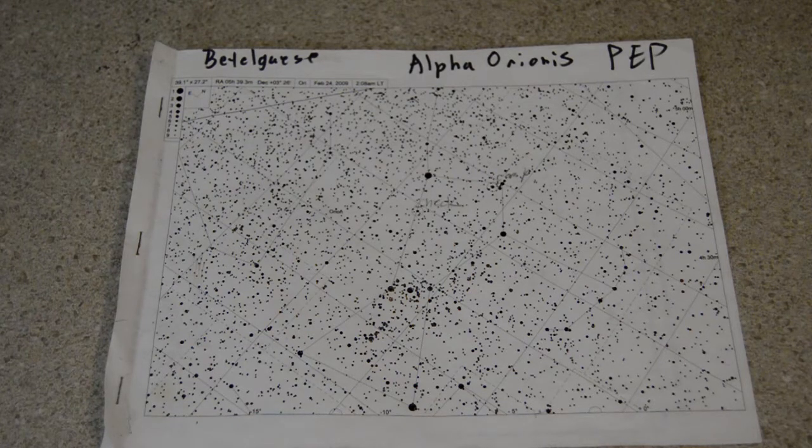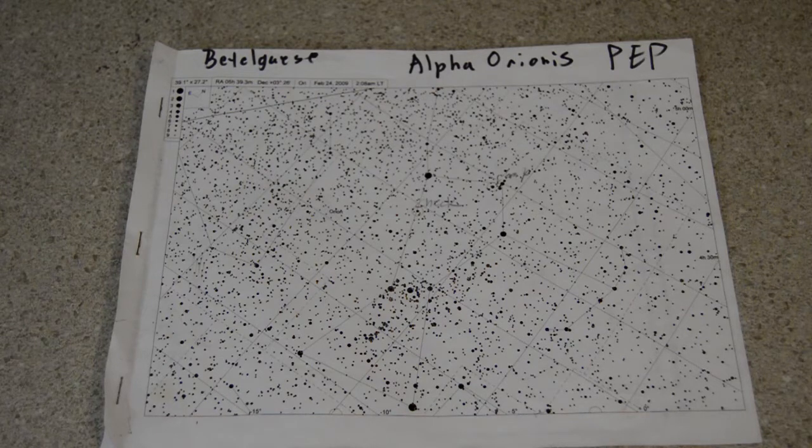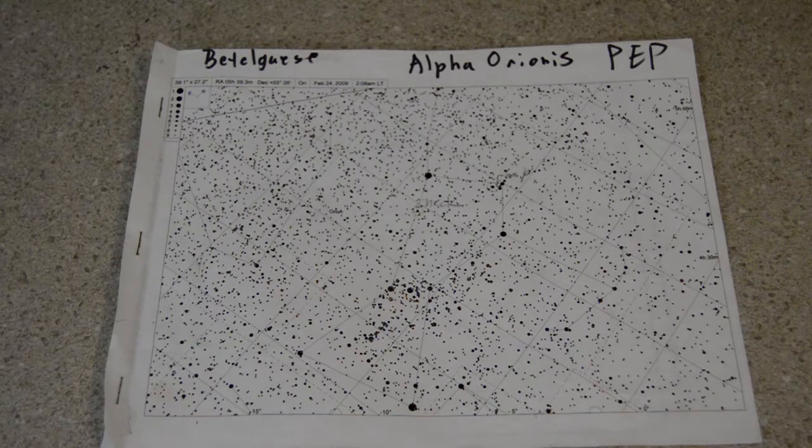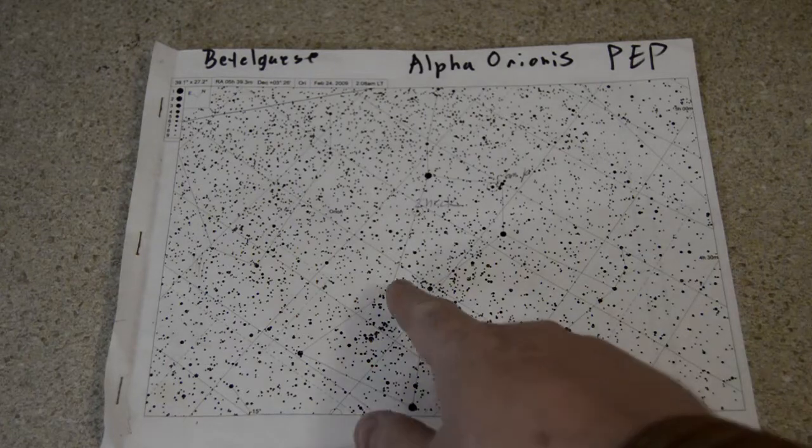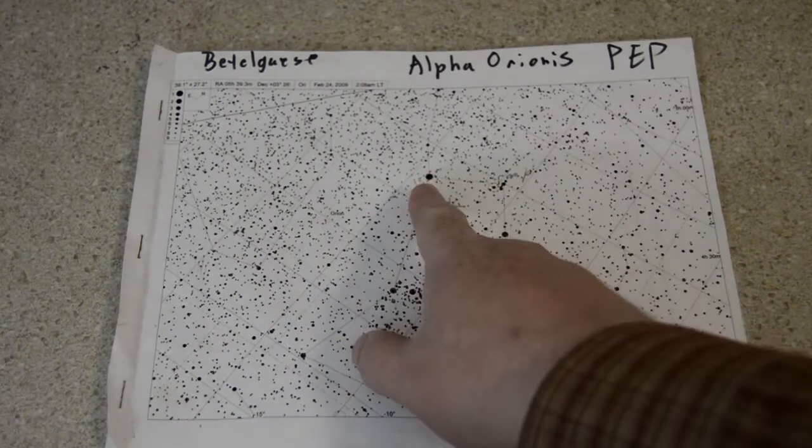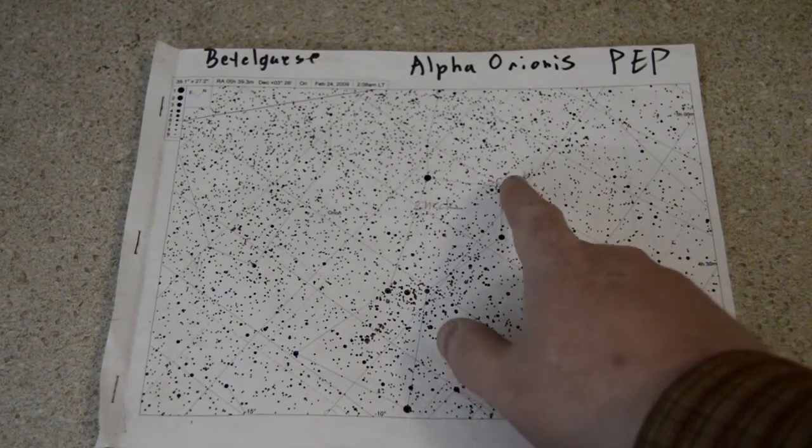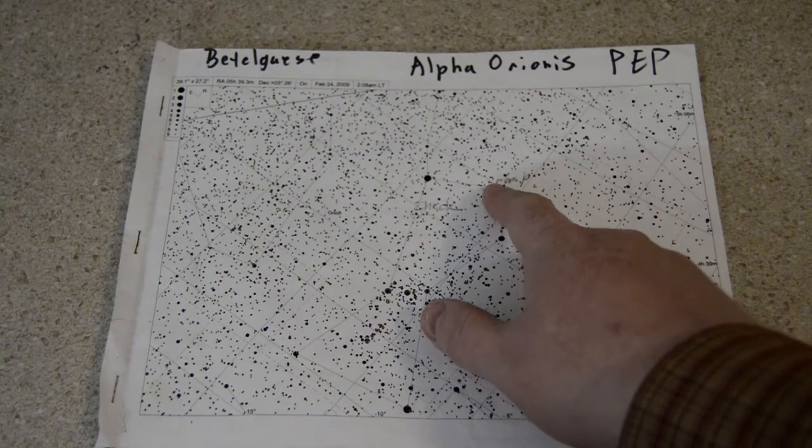This star isn't done very often because it's so bright, and a lot of the various photometry setups people have with CCDs and so forth can't really handle it that well. If you look here, you can see Orion's belt right there. There's Rigel, and there's Betelgeuse.